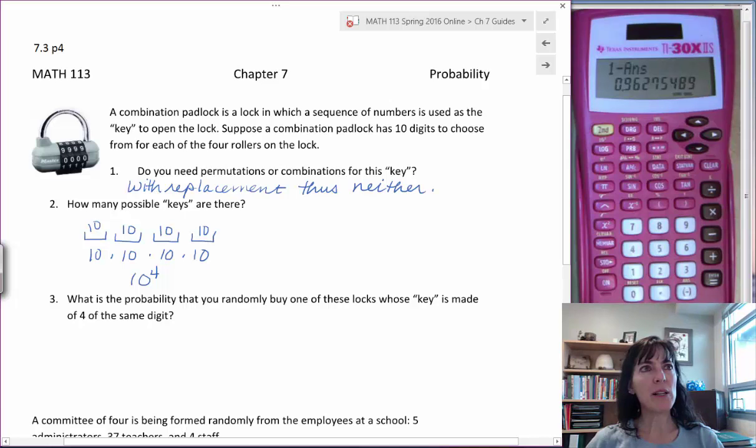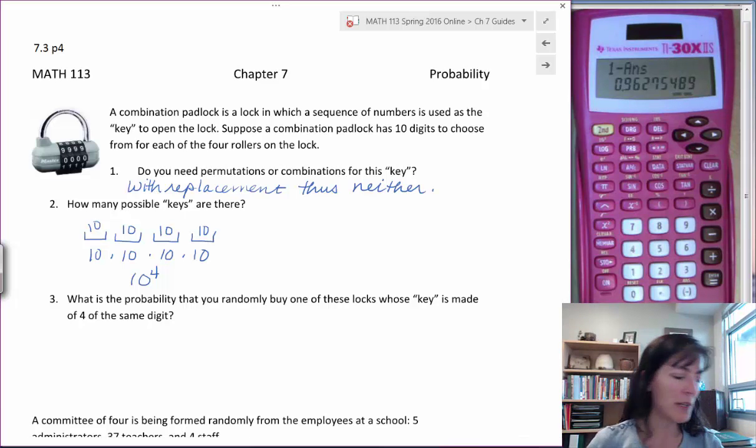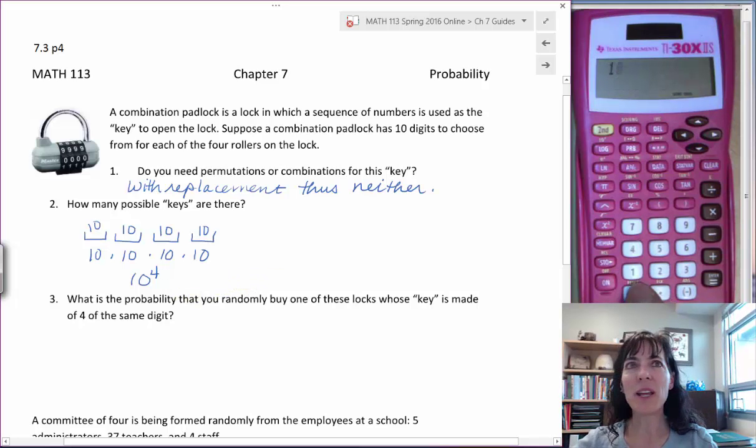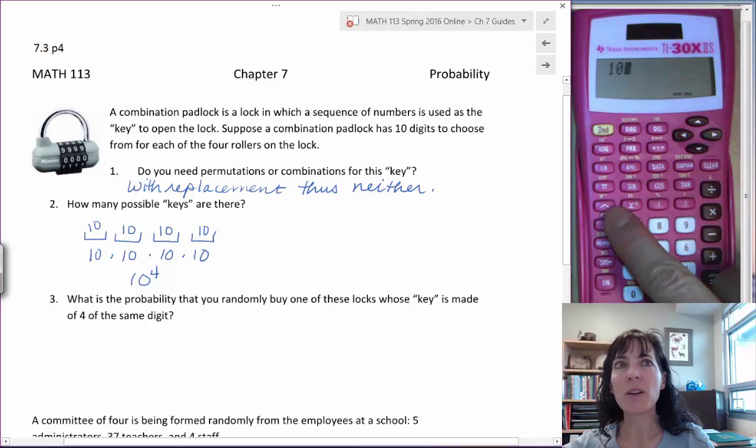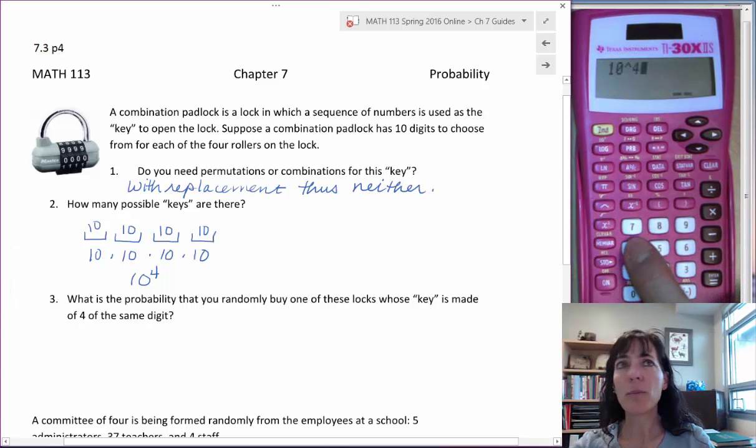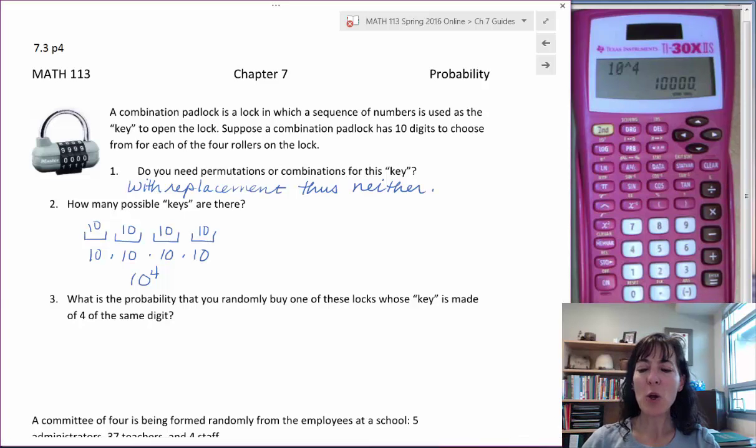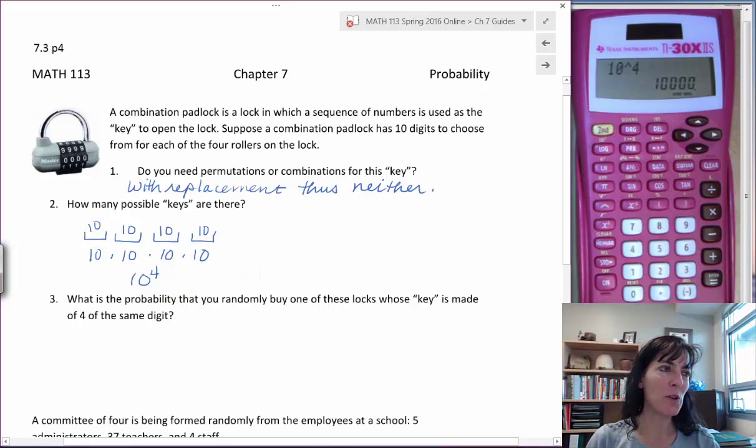How many possibilities, how many times over. If we multiply all those together, 10 times 10 times 10 times 10, we can do that on our calculator, 10 to the fourth. Or you can just write 10 times 10 times 10. We really do expect to see 1, 2, 3, 4 zeros. So when you do 10 to the fourth, that's 10,000 possible keys.